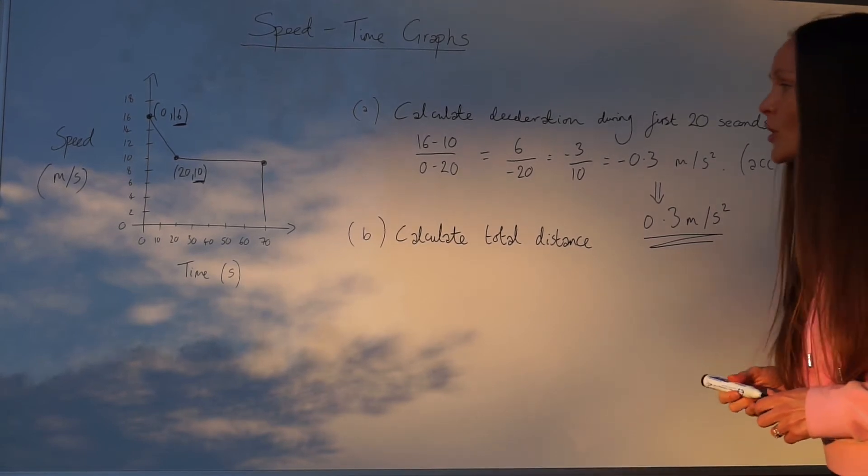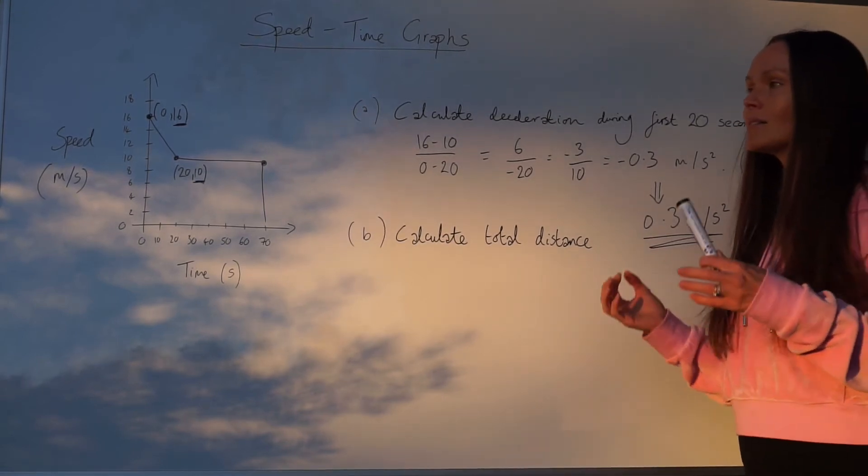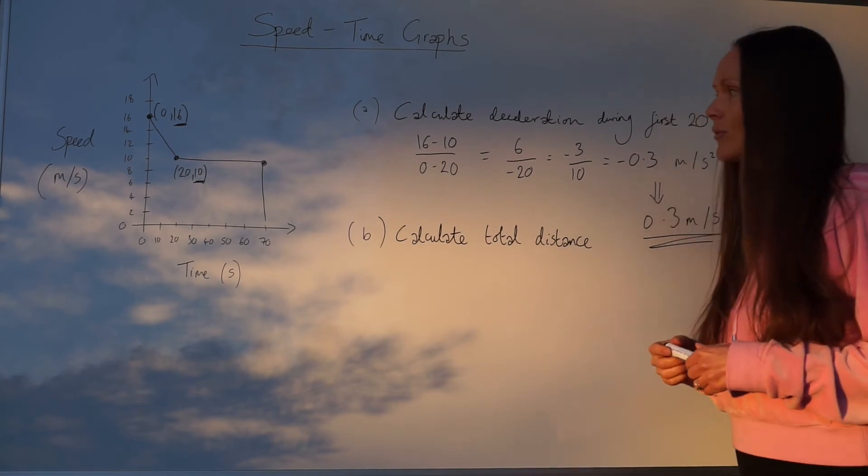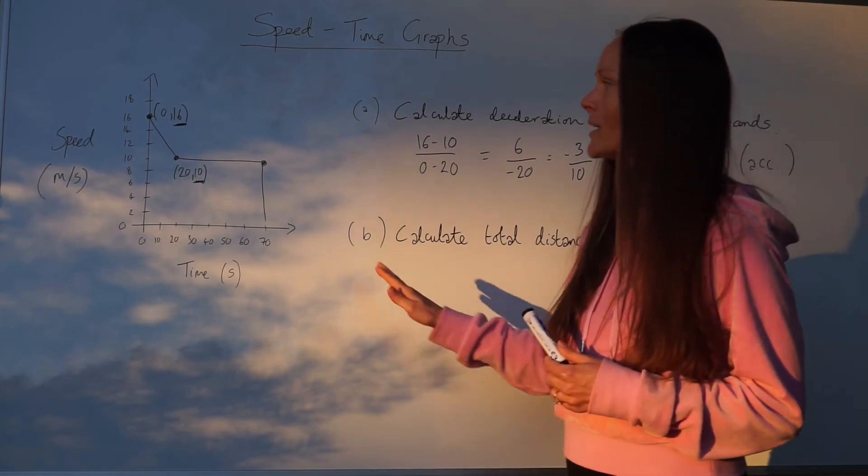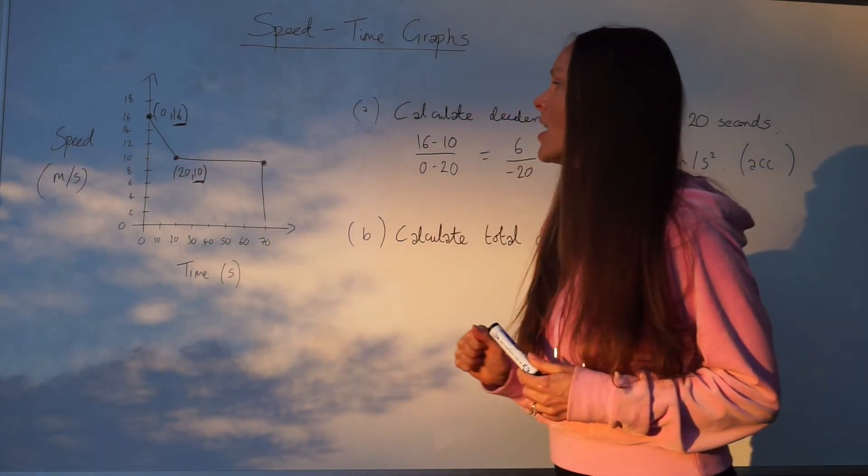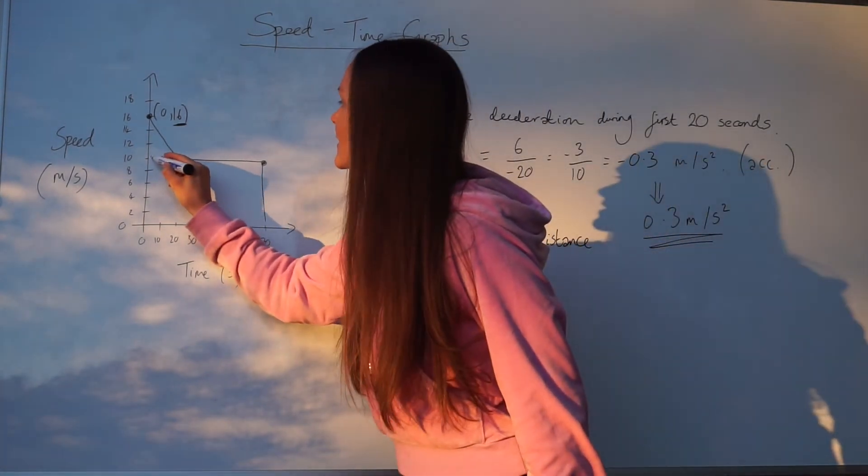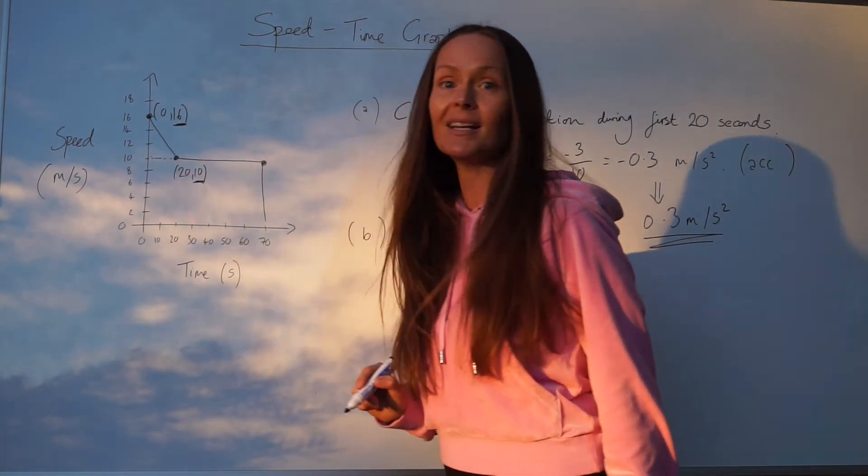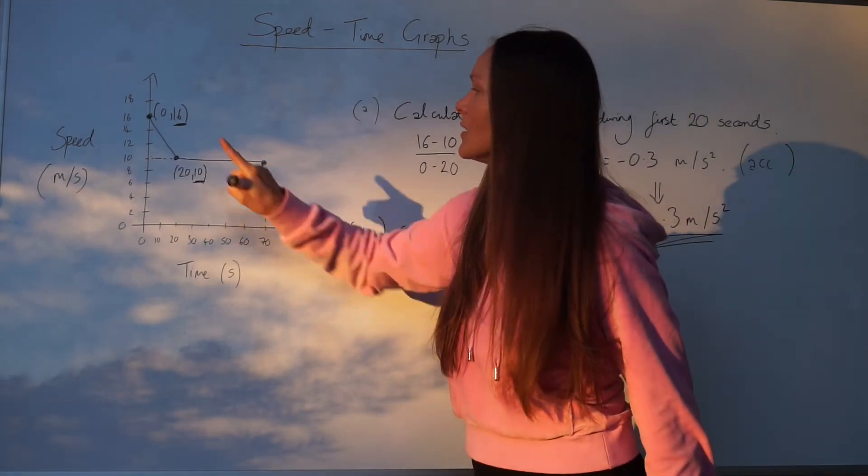Now to work out the total distance, you need to work out the area underneath the graph. Distance is always the area underneath. I'm just going to split this graph up into two familiar looking shapes, a triangle and a rectangle.